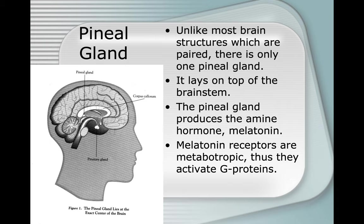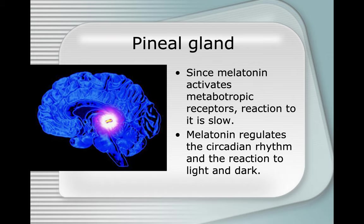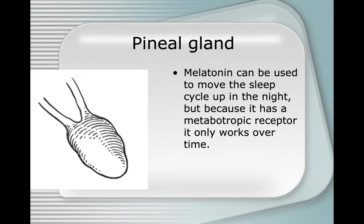Unlike most brain structures, which are paired, there is only one pineal gland. It lies at the top of the brain stem. The pineal gland produces the amine hormone melatonin. Melatonin receptors are metabotropic, meaning they activate G proteins, so reaction to melatonin is slow. Melatonin regulates the circadian rhythm and reaction to light and dark. It can be used to shift the sleep cycle, but because it has a metabotropic receptor, it only works over time.